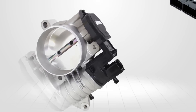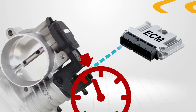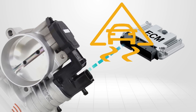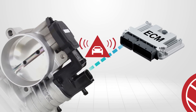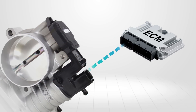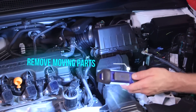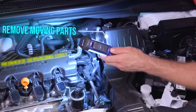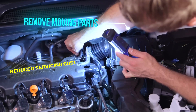TAC systems enable the integration of adaptive cruise control, electronic stability control, traction control, and active braking control with the engine management system. Removing the amount of moving parts also saves money and reduces servicing costs.